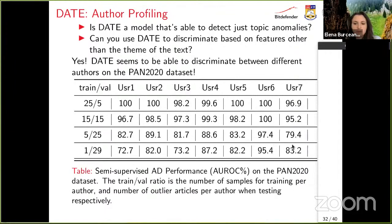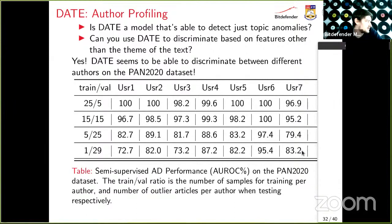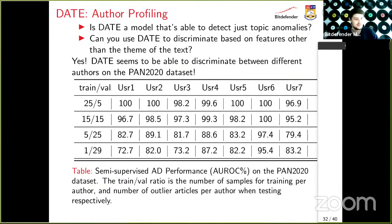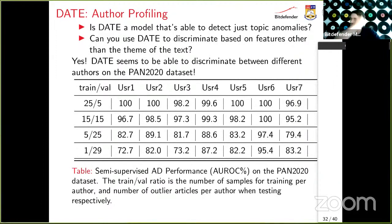Question: could this work on non-language tasks, like image or video anomaly detection? As long as the data is sequential, it should work. DATE could apply to system logs, for example. For vision, visual transformers could theoretically be trained for anomaly detection in this manner, though to my knowledge nobody has done this yet. There are convolutional neural networks that detect vision anomalies via self-supervision, and in theory DATE's approach should extend to computer vision as well.